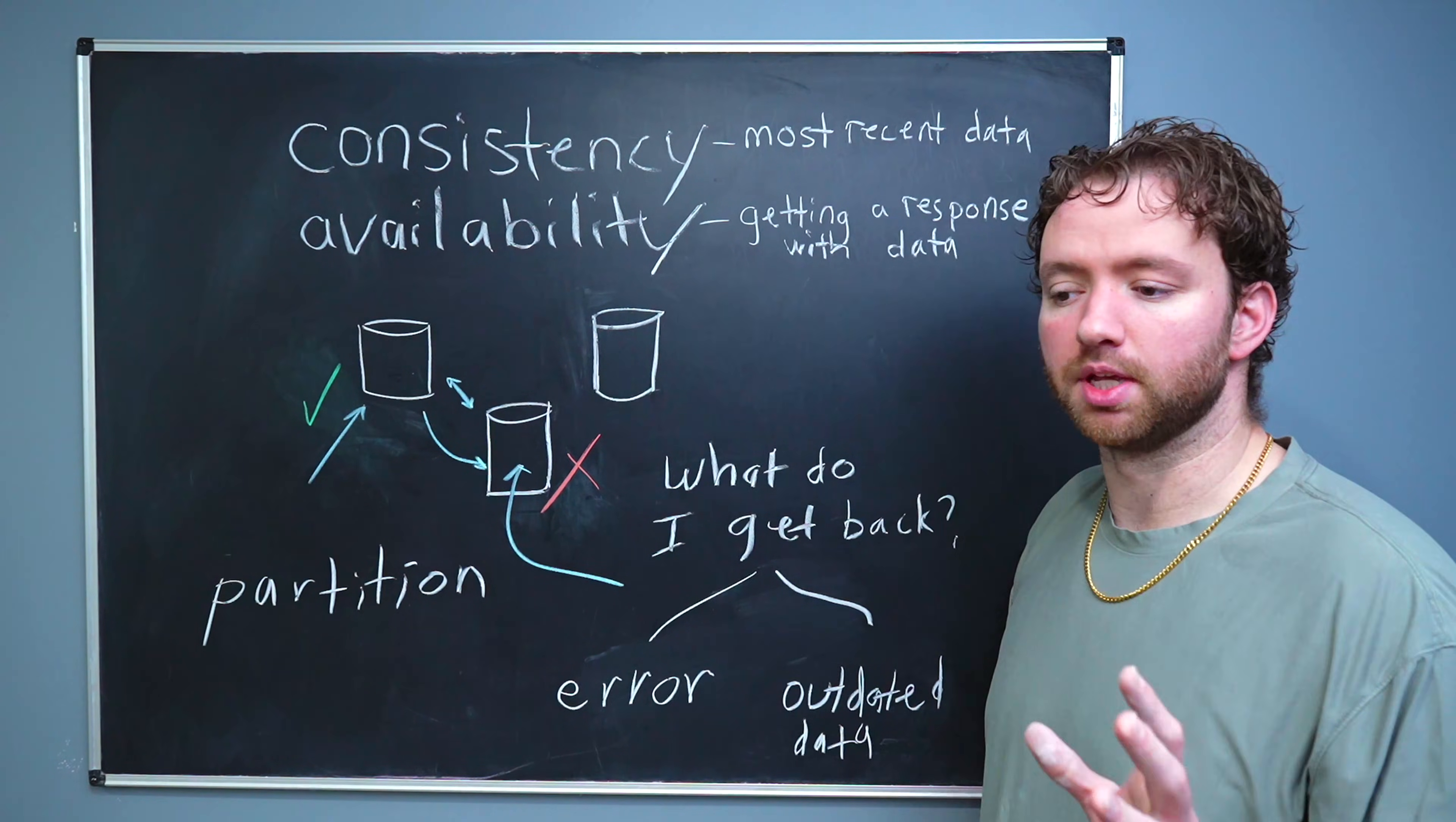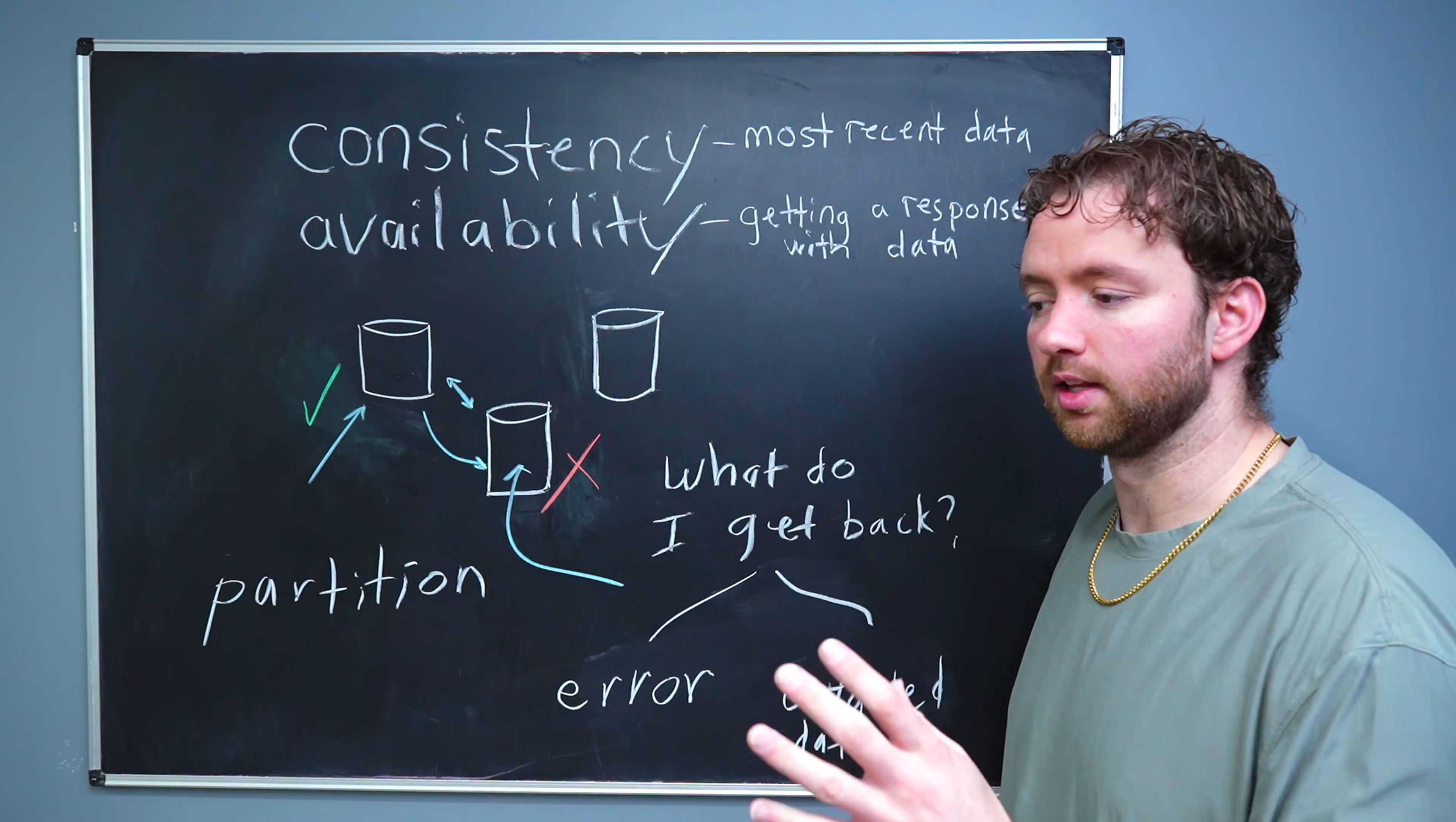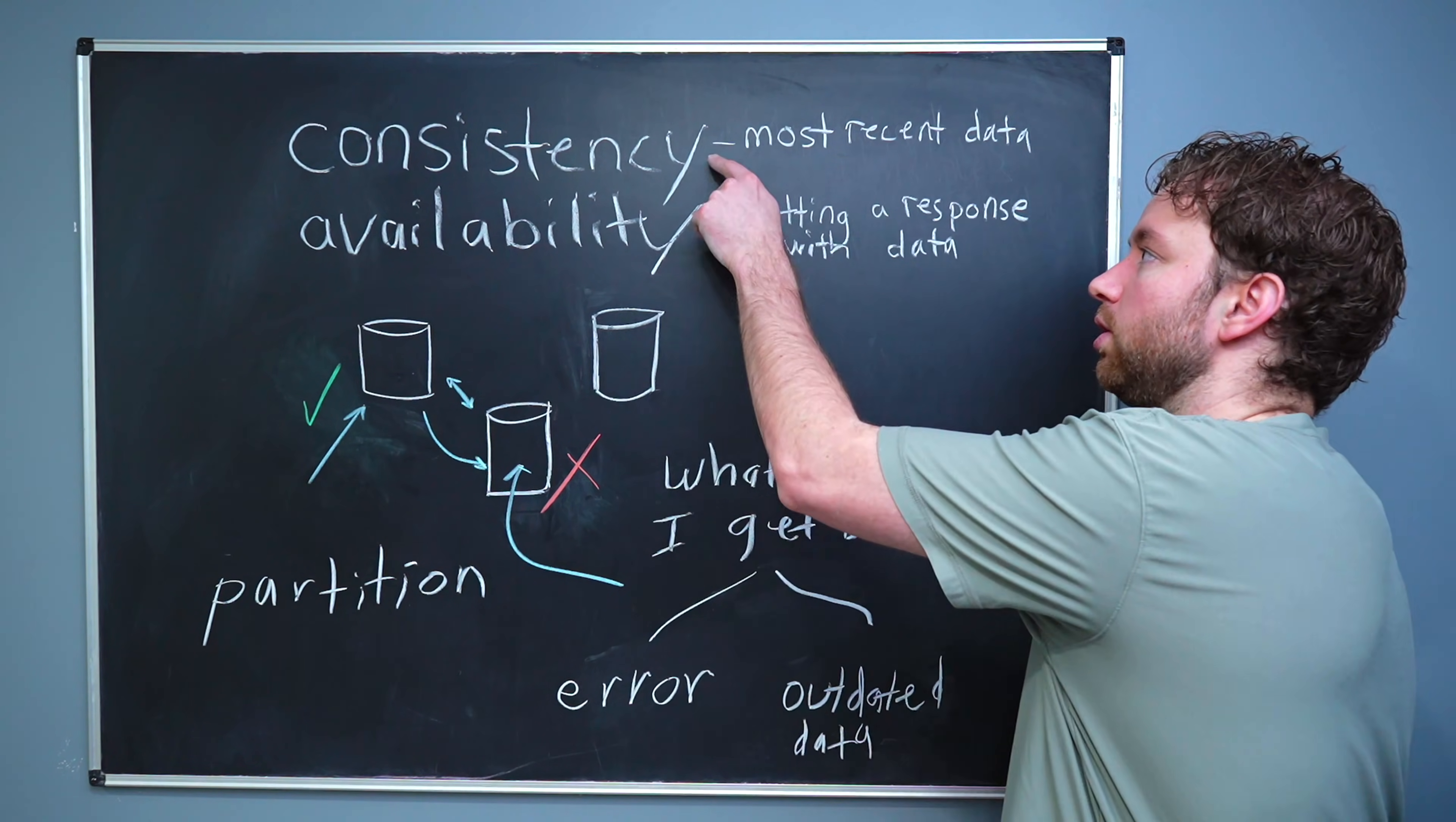And this is something that you might be able to configure or certain databases will have different approaches. But you can think about different scenarios where you might want one over the other. In the case of a financial application, you would probably want things to be consistent. You don't want one request to say that somebody has $1,000 and another request to say somebody has $0 because that data is out of sync. Those data discrepancies could lead to potentially invalid financial transactions being made. We don't ever want that kind of thing to happen. So financial applications prioritize consistency.